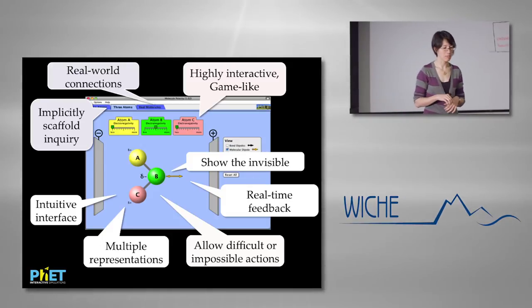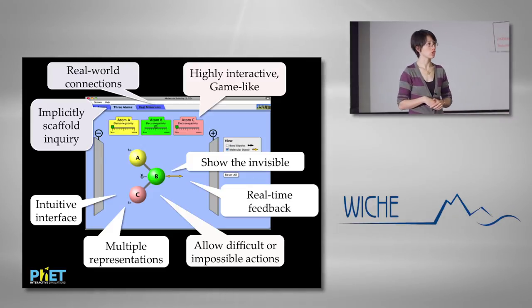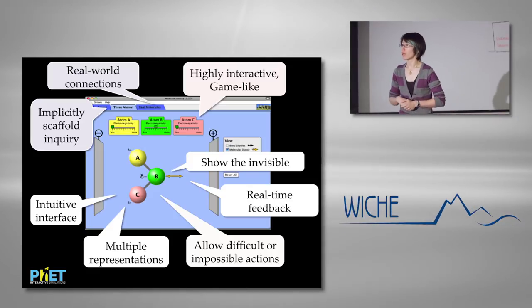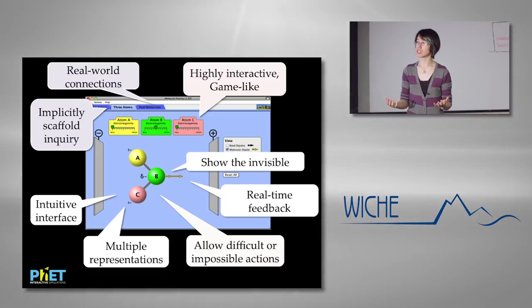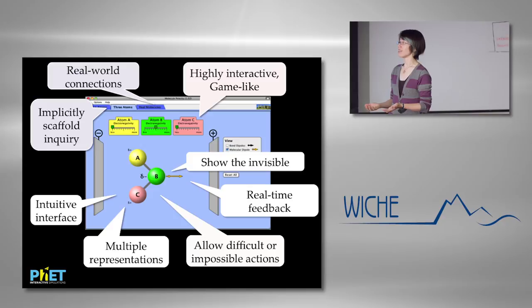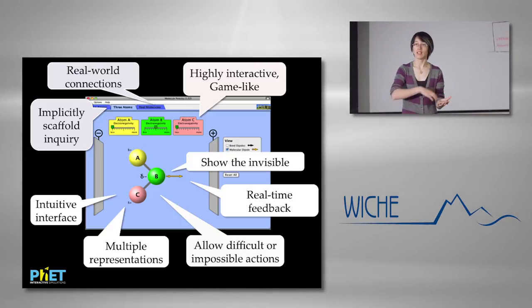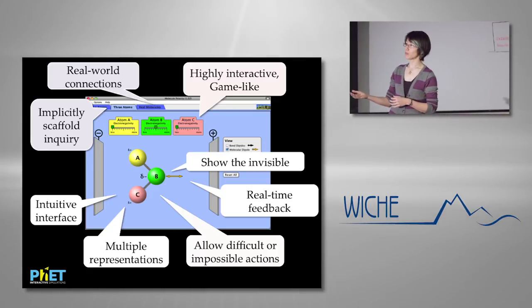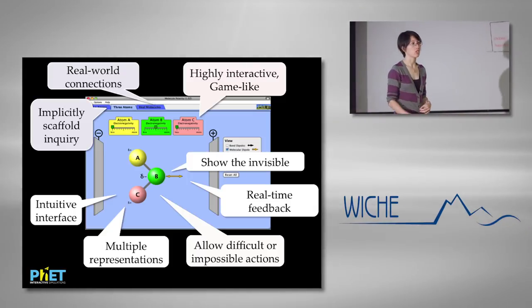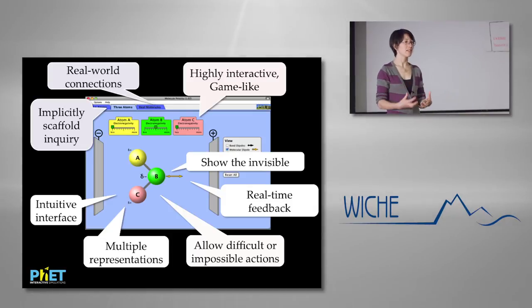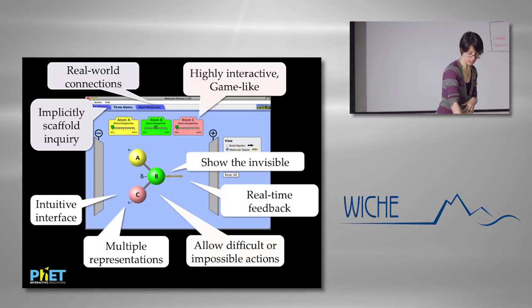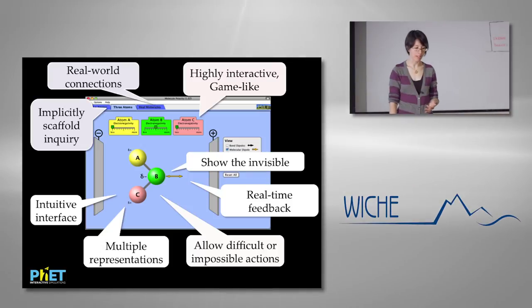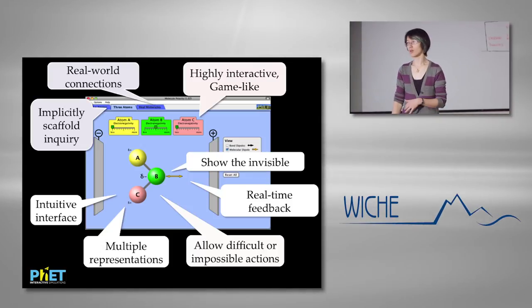In some of our early design work, students encountering a very complex simulation would physically back away from the computer — 'This is too much, this is frightening.' So we want students to reach that level of complexity but with scaffolding. Sometimes we do that with separate screens — the folks investigating Color Vision saw two different concepts on two different screens. For Wave on a String there was one screen, but we chose very carefully what the startup state is, not displaying a lot of numerical values initially.